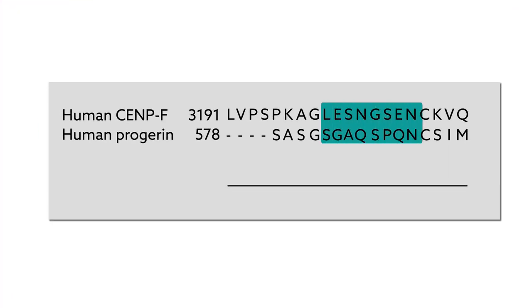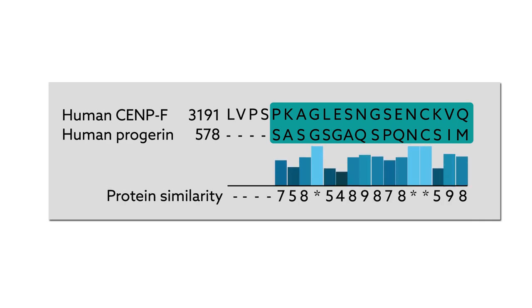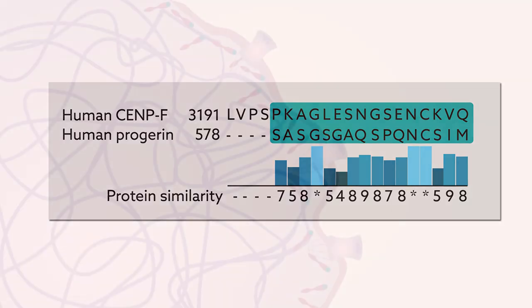Because of sequence similarities between progerin and CENPF at their terminal end, protecting CENPF could be one way of preserving genome integrity in patients with progeria.